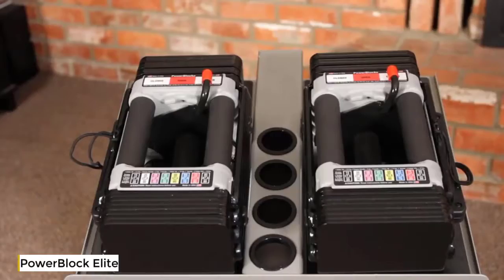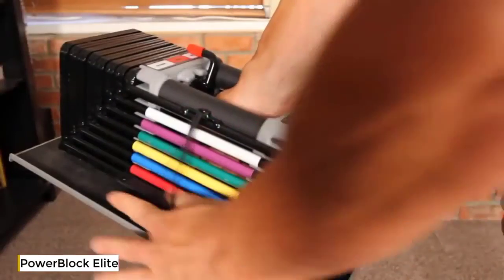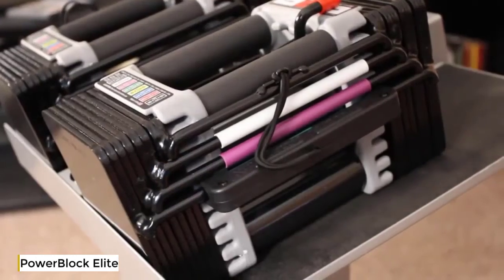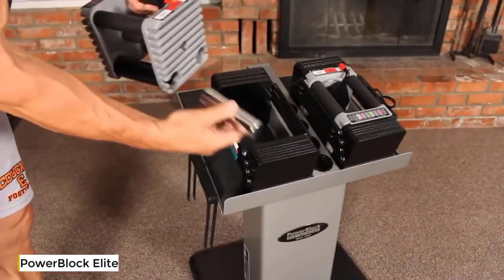The PowerBlock Elite set is an expandable set that is available as a Stage 1, 2, or 3 set. The Elite 50 set consists of a weight stack that has four 10-pound weight plates, a variable weight handle that can be 5, 7.5, or 10 pounds, and a selector pin.